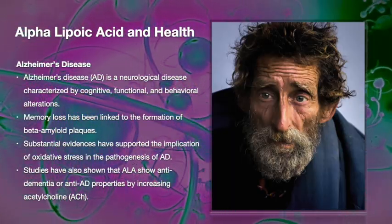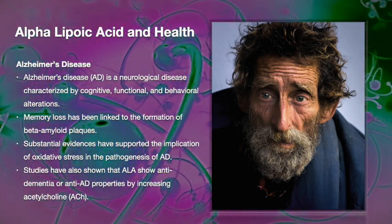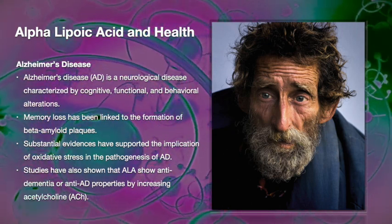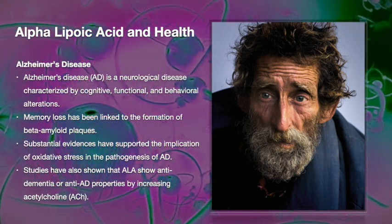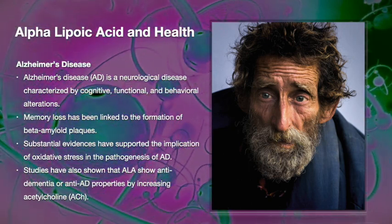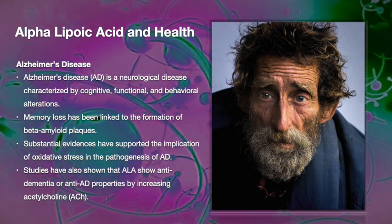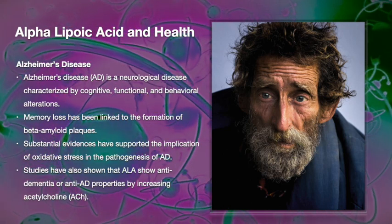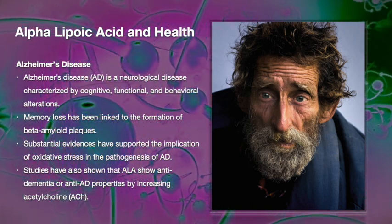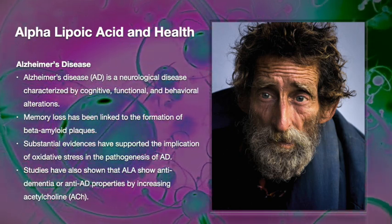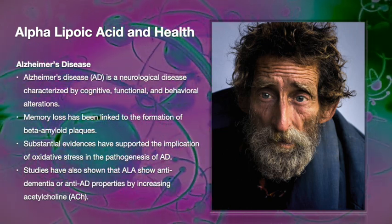Alzheimer's disease, now called type 3 diabetes, is a neurological disease characterized by cognitive, functional, and behavioral alterations. Memory loss has been linked to the formation of beta amyloid plaques in the brain. There is substantial evidence supporting the implication of oxidative stress in the pathogenesis of Alzheimer's disease. ALA is a fabulous antioxidant for such purposes, and studies have shown it has anti-dementia or anti-Alzheimer's properties by increasing acetylcholine, a neurotransmitter.